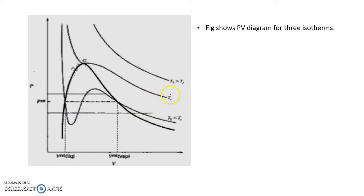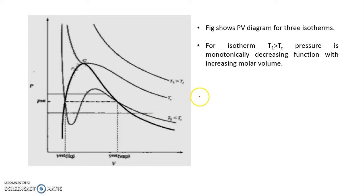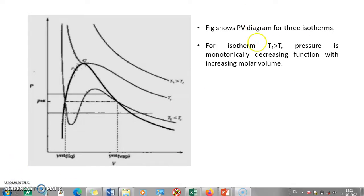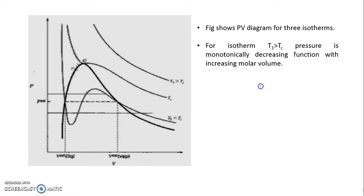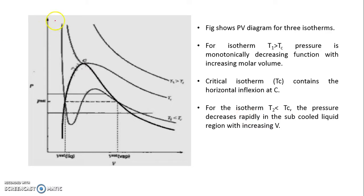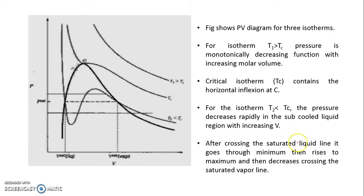Now let us see how the cubic equation of state provides roots. For all isotherms with T greater than Tc, pressure is a decreasing function of volume — shown as a smooth curve. For T equal to Tc there is a line with an inflection point, and for T less than Tc the pressure decreases, passes through a minima, then decreases again in the vapor region. This is the known PV diagram behavior.